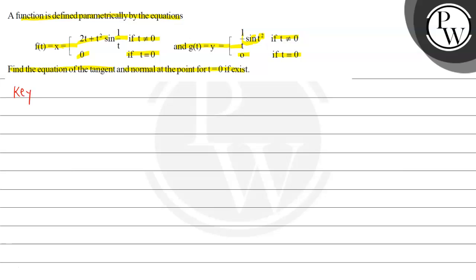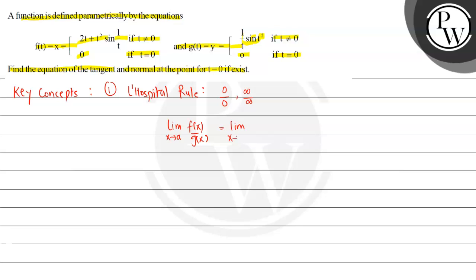The key concepts: the first concept is L'Hospital's rule. That is, if the limit is in the form 0/0 or ∞/∞, then limit x→a of f(x)/g(x) equals limit x→a of f'(x)/g'(x), that is the first derivative over g'(x), if the limit exists.